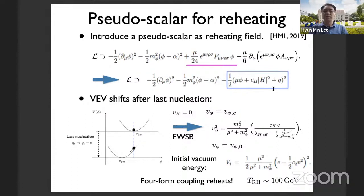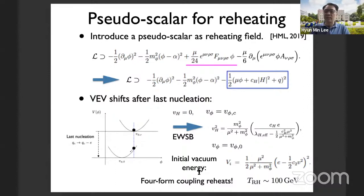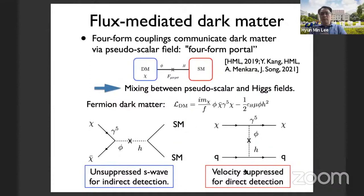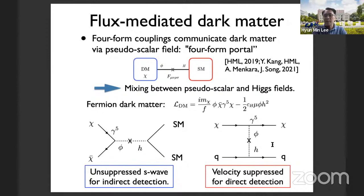The same pseudo-scalar field can be used for reheating with the same Lagrangian, but with the Higgs field also coupled to the four-form flux. You have a quadratic form of the effective potential for the pseudo-scalar field and Higgs. Because of the mechanism of shifted vacuum expectation value, you can start with non-negligible initial vacuum energy and achieve a reheating temperature around 100 GeV scale. In this mechanism, it is natural to think about fermion dark matter coupled to the pseudo-scalar field, where this pseudo-scalar mediator communicates between the standard model and the dark sector. Because of the pseudo-scalar nature of this mediator, there is a suppression in direct detection, while there are observable signatures for indirect detection.